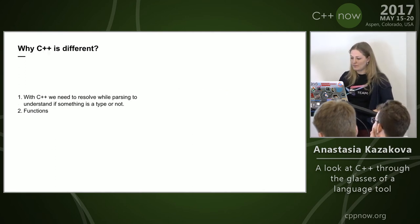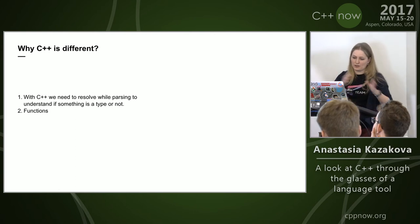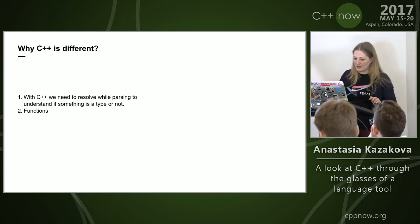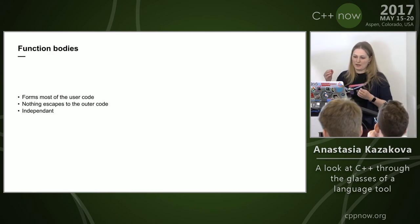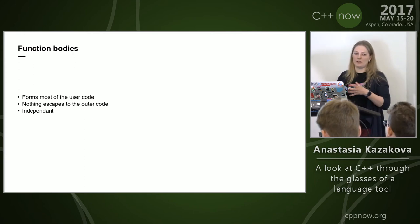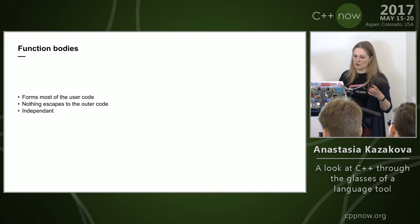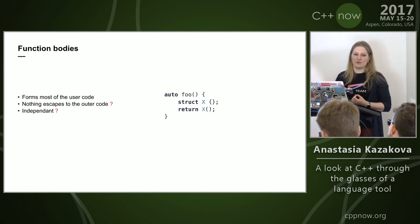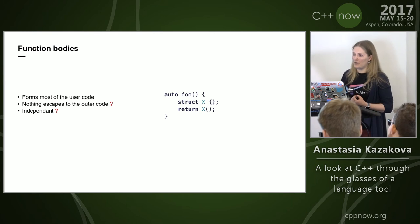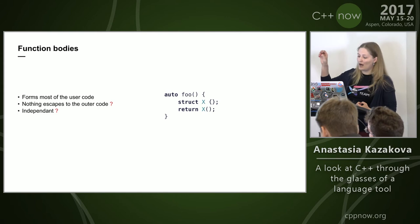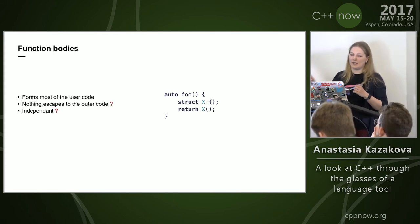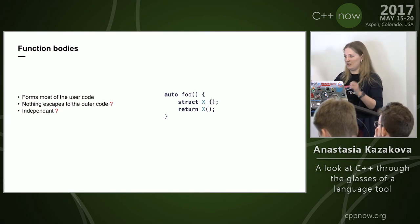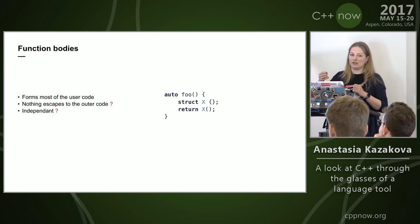Let's talk about another problem: function bodies. Function bodies form most of the user code, and in the ideal world nothing escapes to the outer code and function bodies are independent. But for C++ that's not the case. With auto return types, to understand what a function returns you have to parse the function body. You cannot postpone parsing the function body until you actually start editing there — you have to parse it just to understand what a caller gets back.